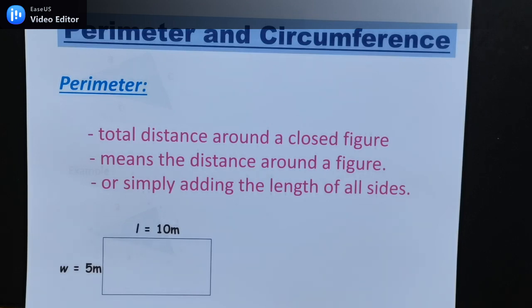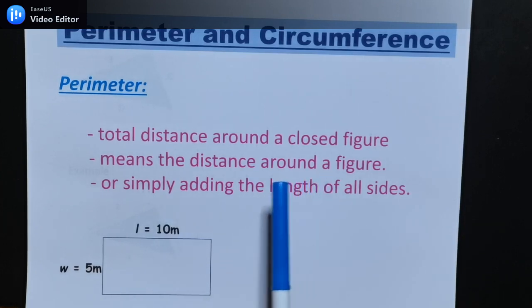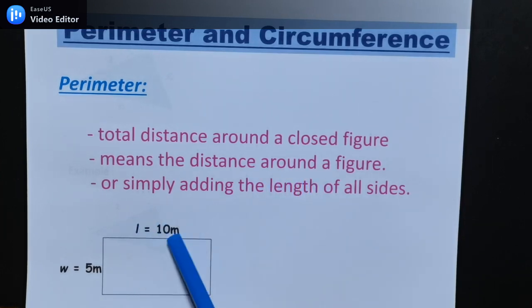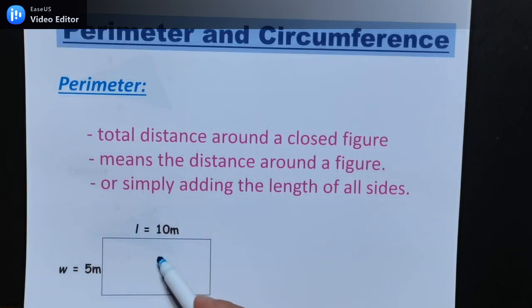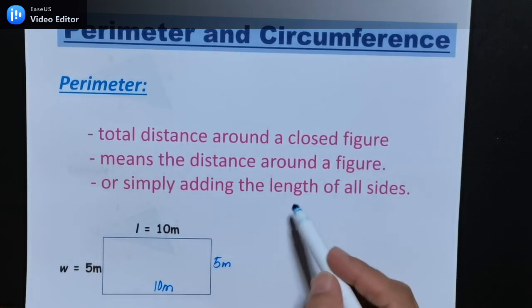First, perimeter. What is perimeter? Perimeter is the total distance around a closed figure — the distance around a figure, or simply adding the lengths of all sides. From this example, we have a length of 10 meters, so the opposite side of this rectangle is also 10 meters. We have a width of 5 meters, so the opposite is also 5 meters.